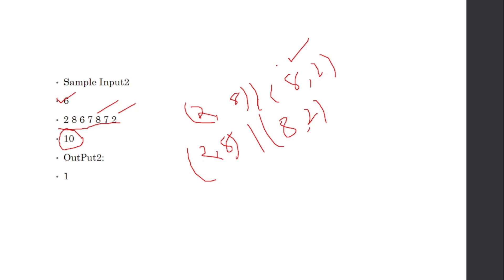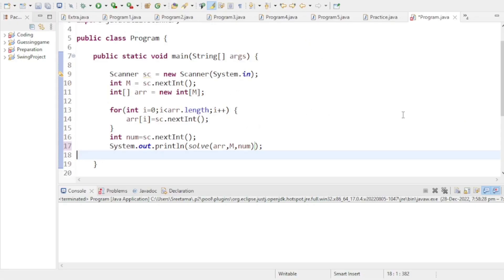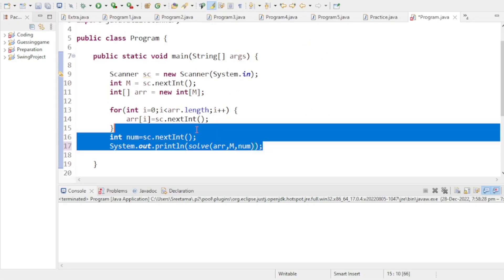The same rule applies here: a comma b equals b comma a. So (2, 8) and (8, 2) count as one unique pair. Even if you pick the first 2 and the 8, then the 8 and the second 2, those two pairs are still treated as the same. You need to return only the count of unique pairs.